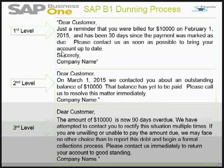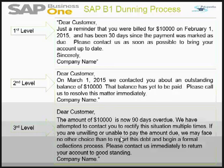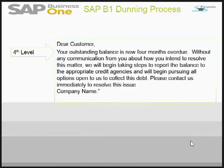If the customer still fails to respond appropriately, the company sends a third-level letter with a stricter tone, stating that the amount of $10,000 is now 90 days overdue and multiple contact attempts have been made. If the customer is unwilling or unable to pay, the company may have no choice but to report the debt and begin a formal collection process. If the customer fails even after 90 days — reaching 120 days — a fourth-level letter can be issued, which is almost threatening legal action.